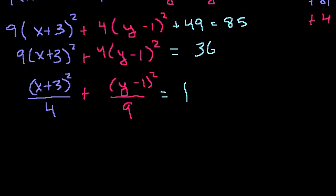And now we can actually graph it. So first of all, where is the center of this ellipse going to be? It's going to be at x is equal to negative 3. What x value makes this whole term 0? So it's going to be x is equal to minus 3. And y is going to be equal to 1. What y value makes this term 0? y is equal to 1. That's our center.